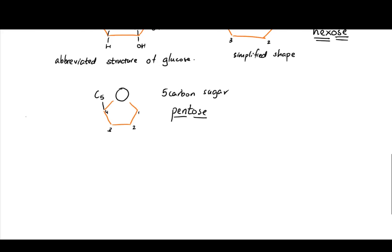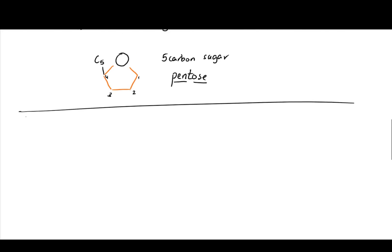So if we move down, we'll be able to see how do we end up having this simplified shape, right? We just eliminate carbon and we get this simplified shape or abbreviated shape. If you have 5 carbon, you have 5 pentose.